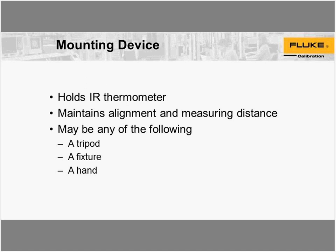The mounting device holds the IR thermometer. It can take one of different forms — it could be a tripod, some fixed ring that your laboratory comes up with, or it could be the human hand. If you have a big enough thermal radiation source, typically a manual calibration using your hand as a mounting device is good enough. If some technicians are very nervous or have trouble with trigger technique, you want to consider better fixturing. The mounting device maintains alignment between the IR thermometer and the thermal radiation source, and it also maintains the measuring distance.